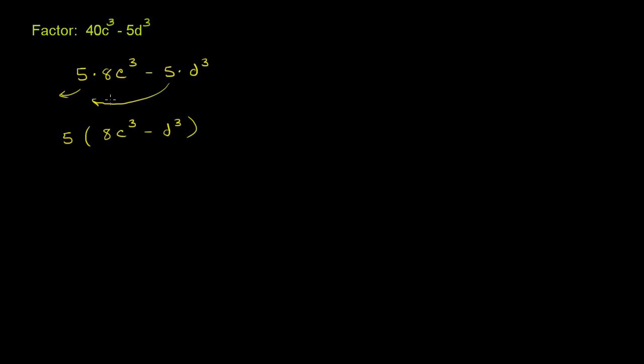So as you see, factoring it really is just undistributing the 5, reversing the distributive property. And when you write it like this, it might jump out at you that 8 is a perfect cube. It's 2 to the third power. c to the third power is obviously c to the third power.